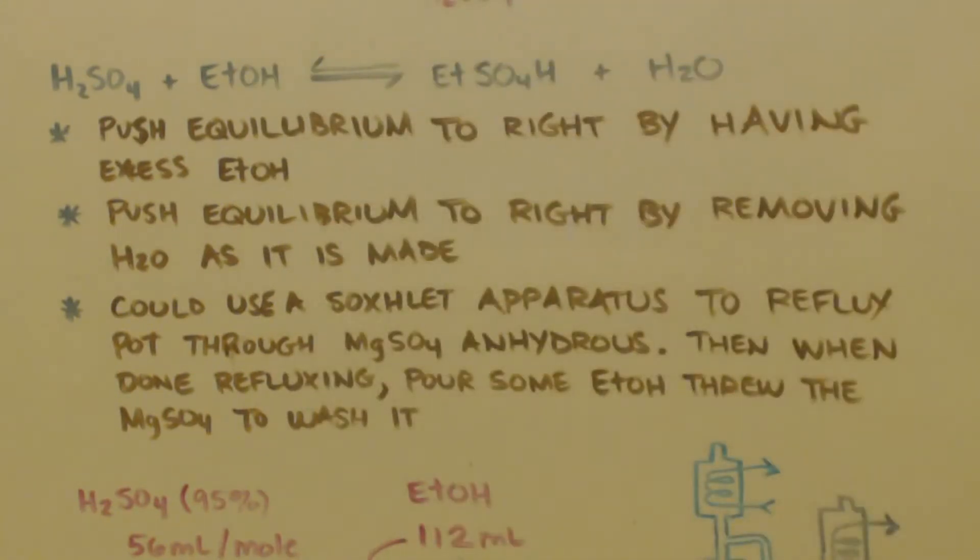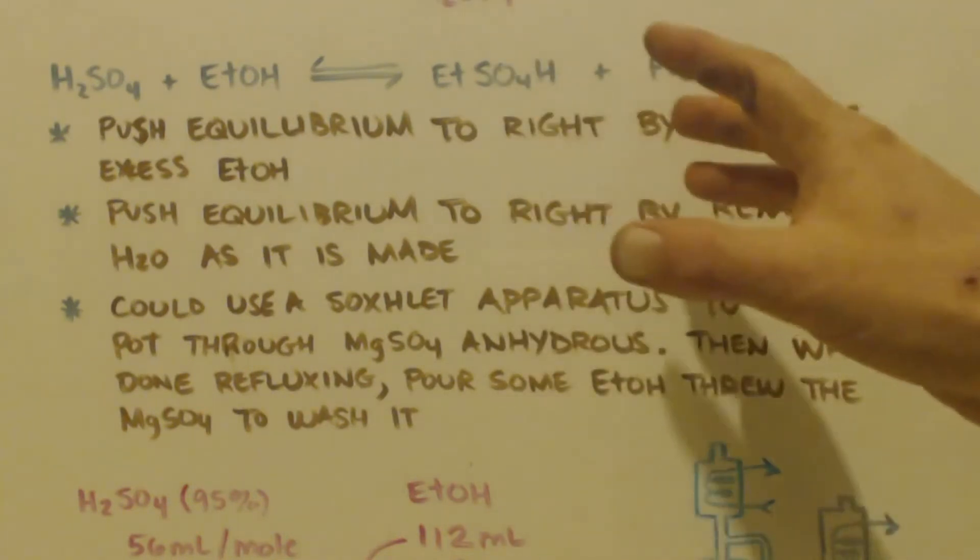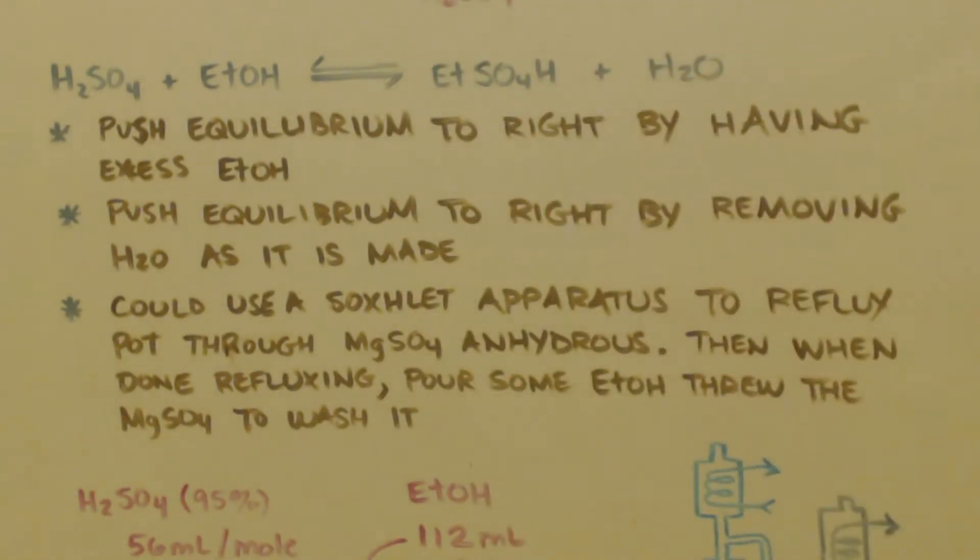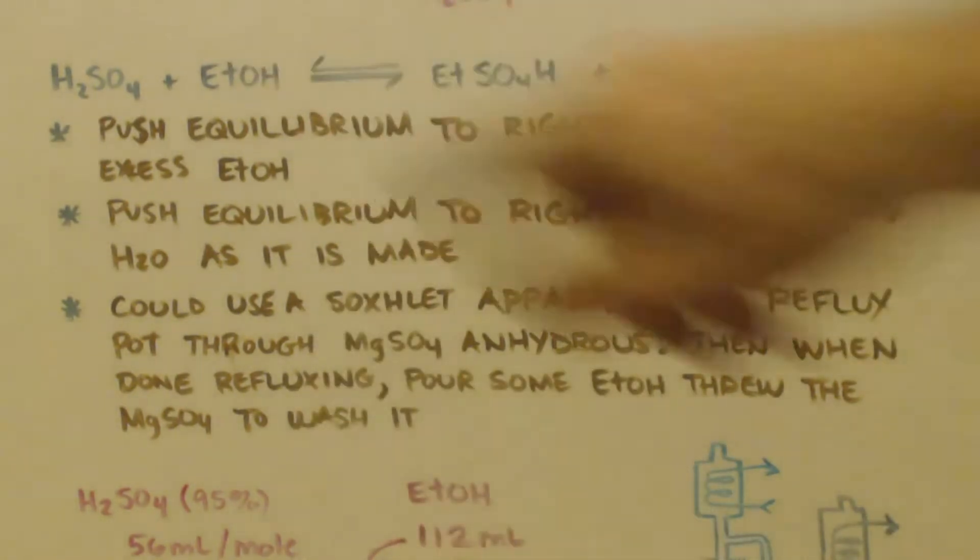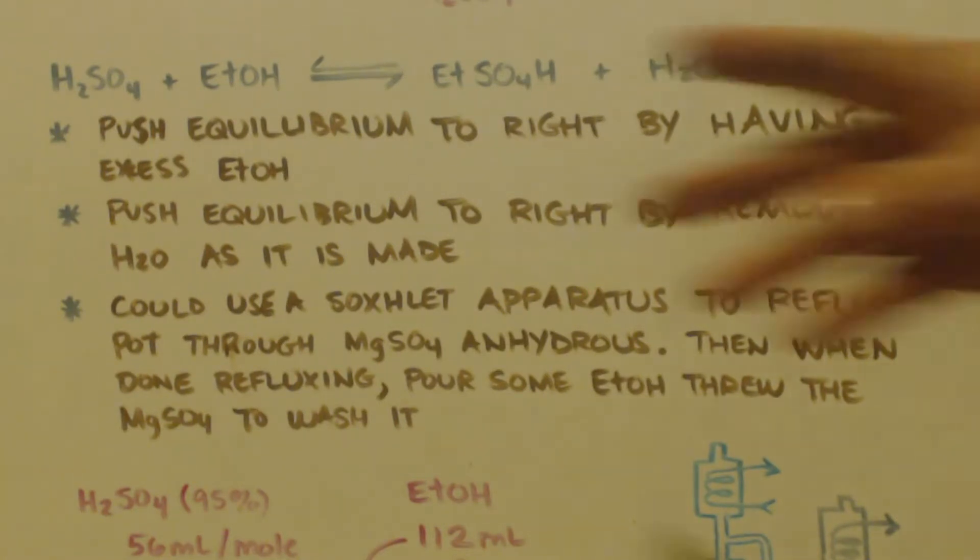Now before we get into how much I used, let me go over a couple of things. Here's the equation again. Keep in mind, this is an equilibrium equation. So you can only make so much of this product before the equilibrium will stop it. How do you push the equilibrium to the right over to here where you want it? One way is by having excess of one of these things over here.